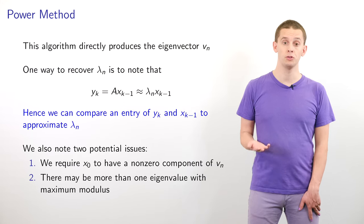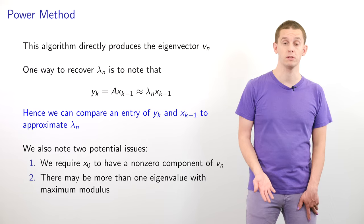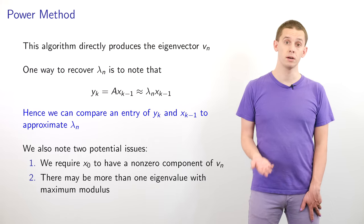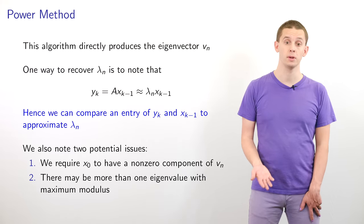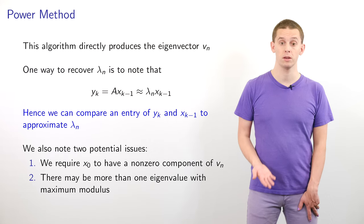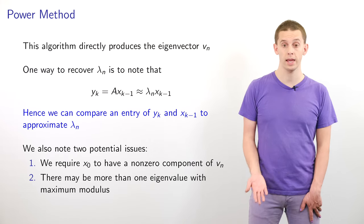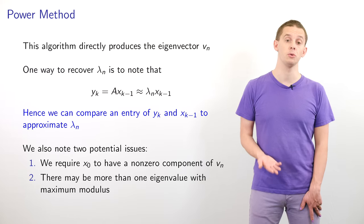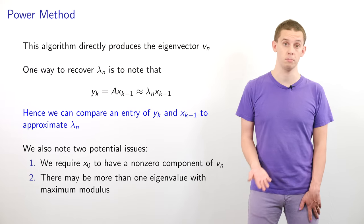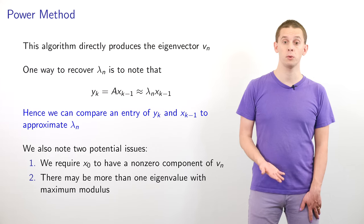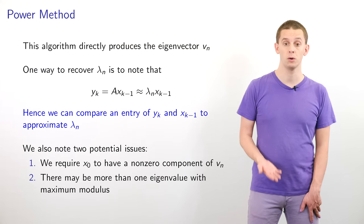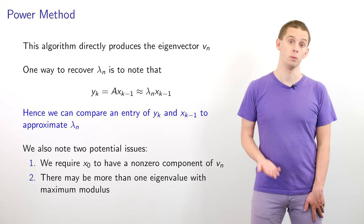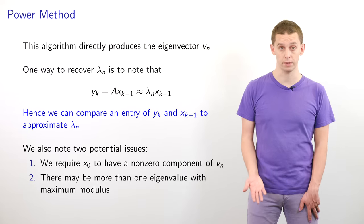The algorithm will directly produce the eigenvector v_n. One way to recover the eigenvalue lambda_n is to note that y_k = A x_{k-1} is approximately equal to lambda times x_{k-1}. Therefore, we can compare an entry of y_k to x_{k-1} to approximate our eigenvalue.